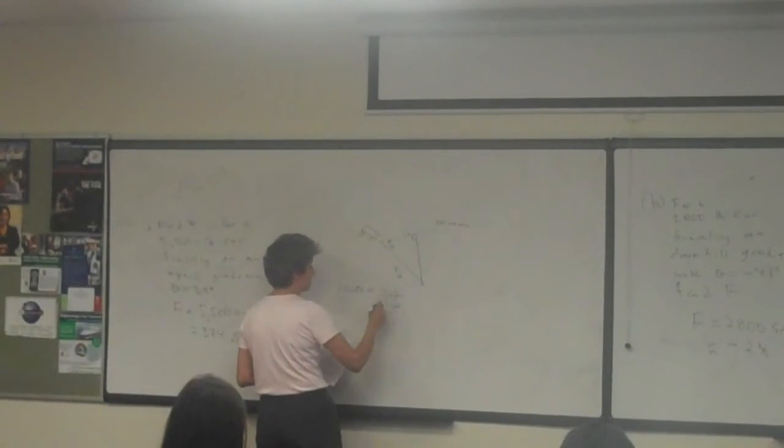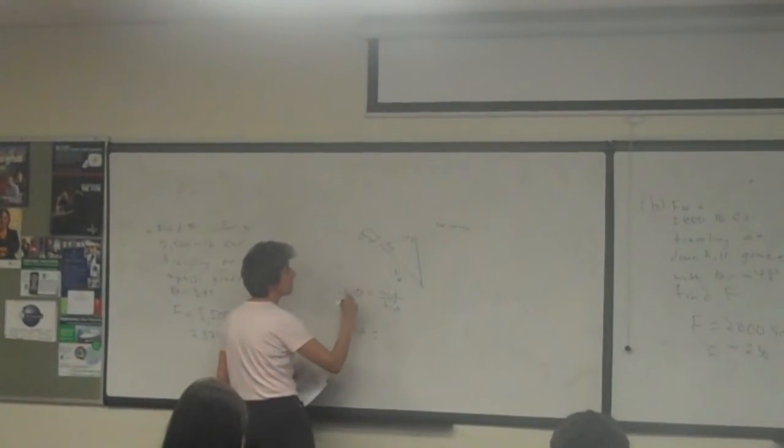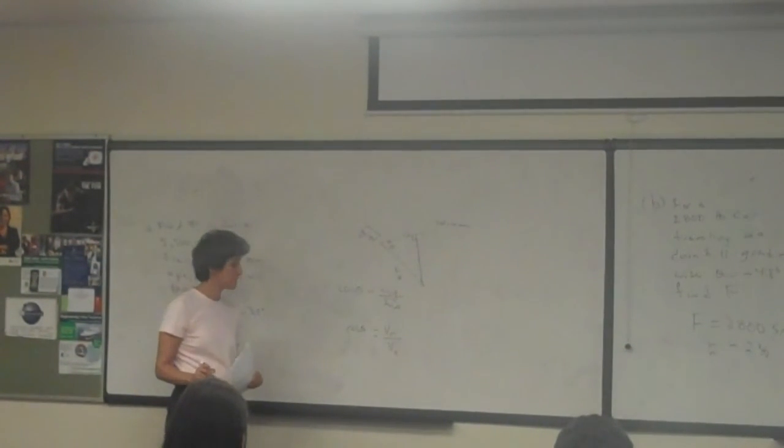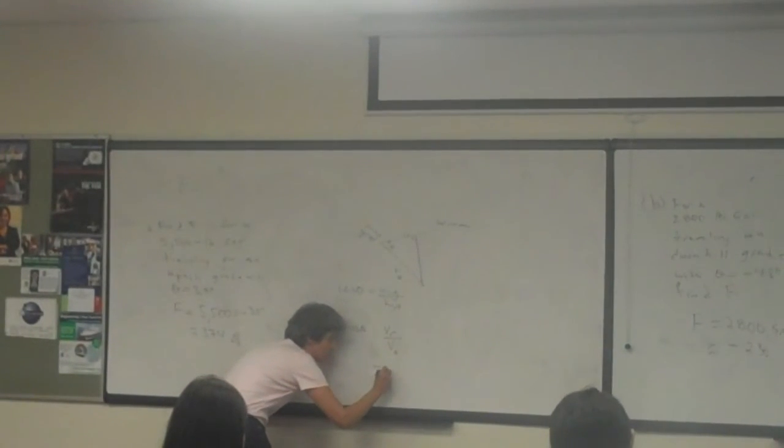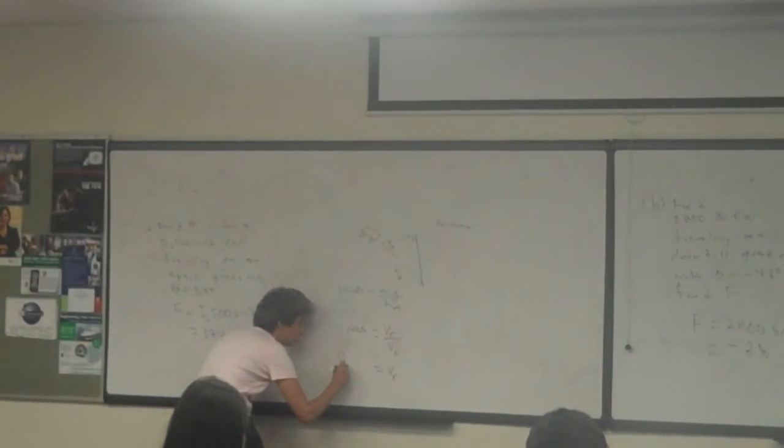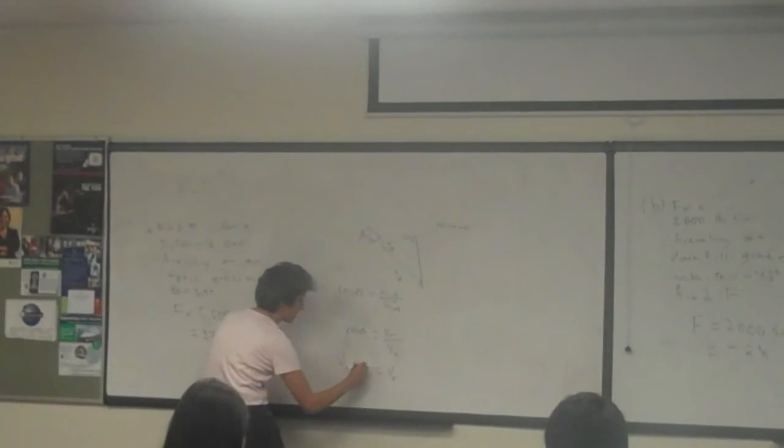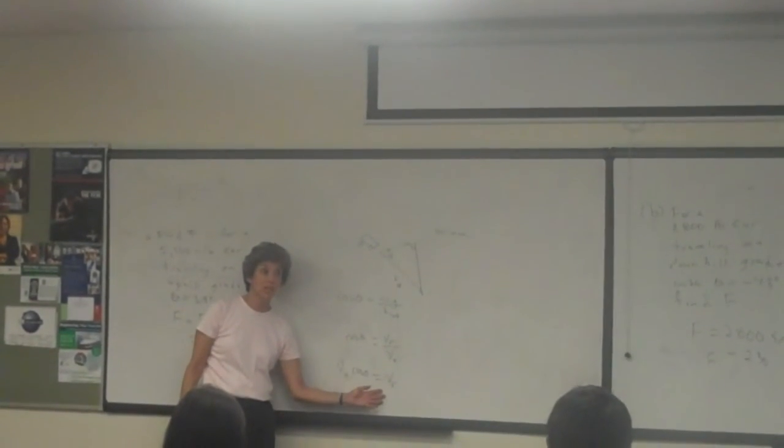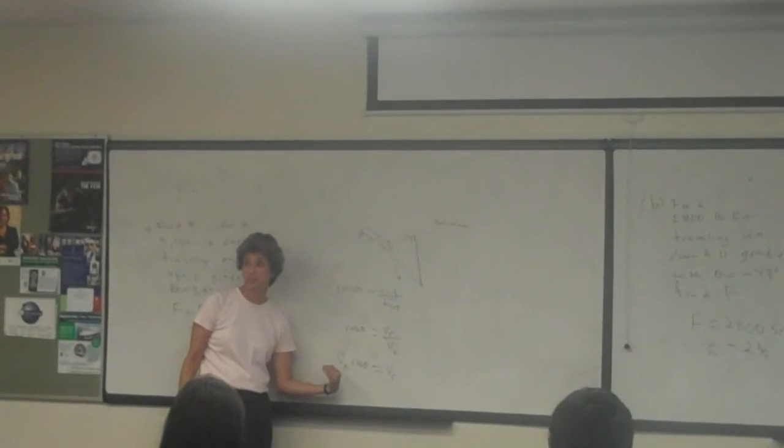So in this case here, cosine theta is V sub r over V sub a, right? So then the relationship that we have is V sub r equals the actual times the cosine of theta. Once more, if you take a look at this, remember, biggest cosine theta can get is 1, right? So this is actually slower than the actual speed of the car traveling, right? Is that good? Is everybody happy?